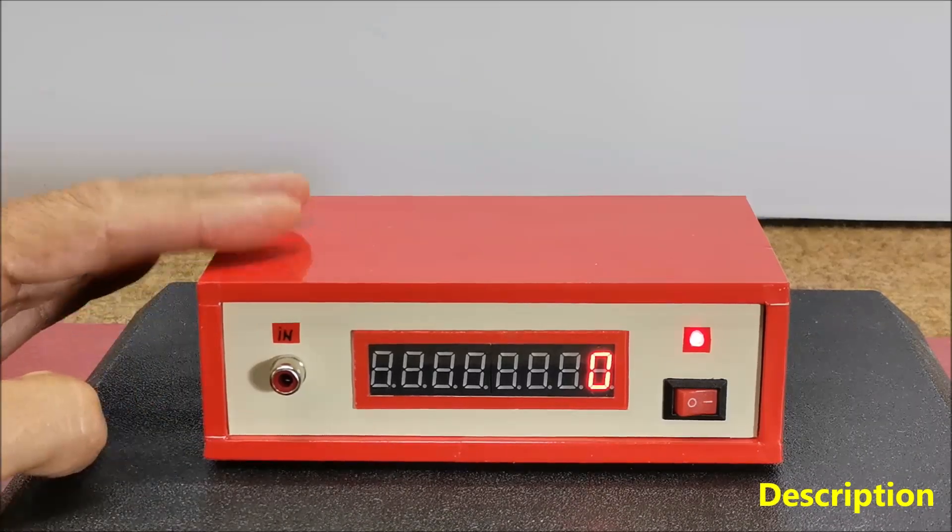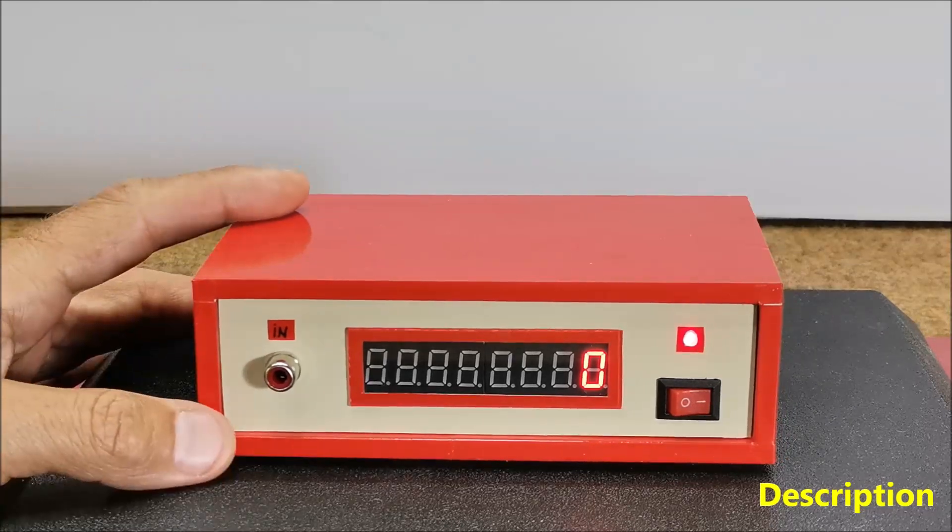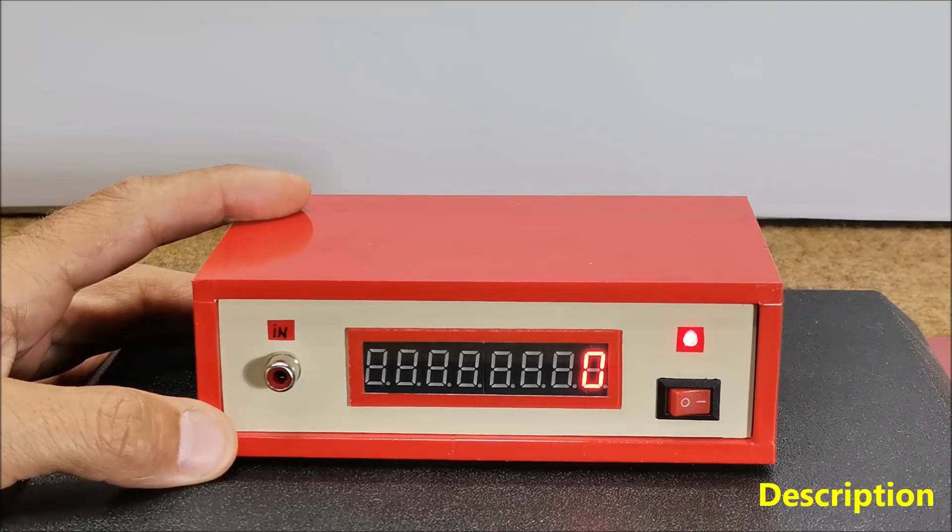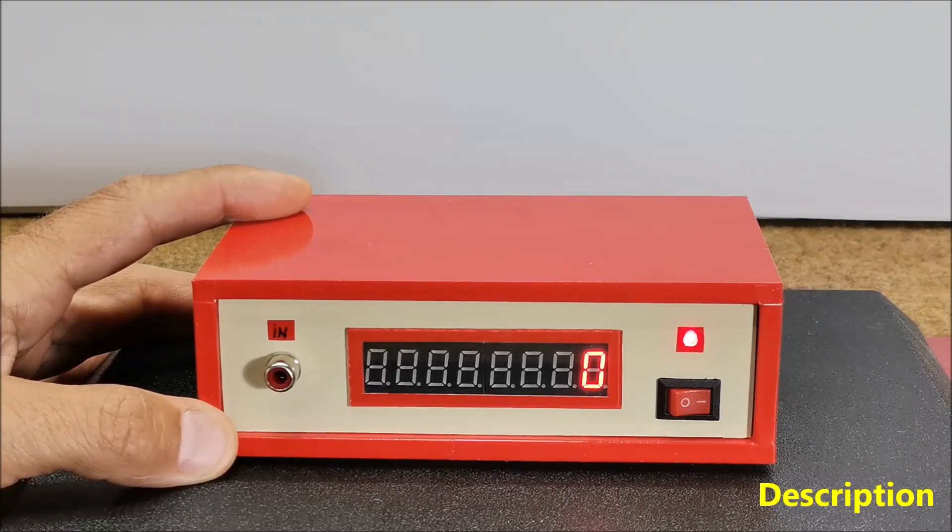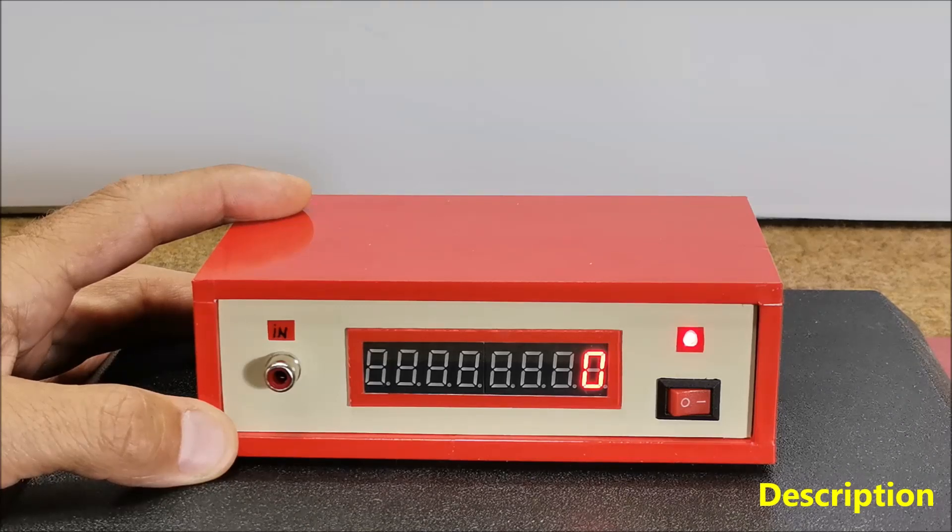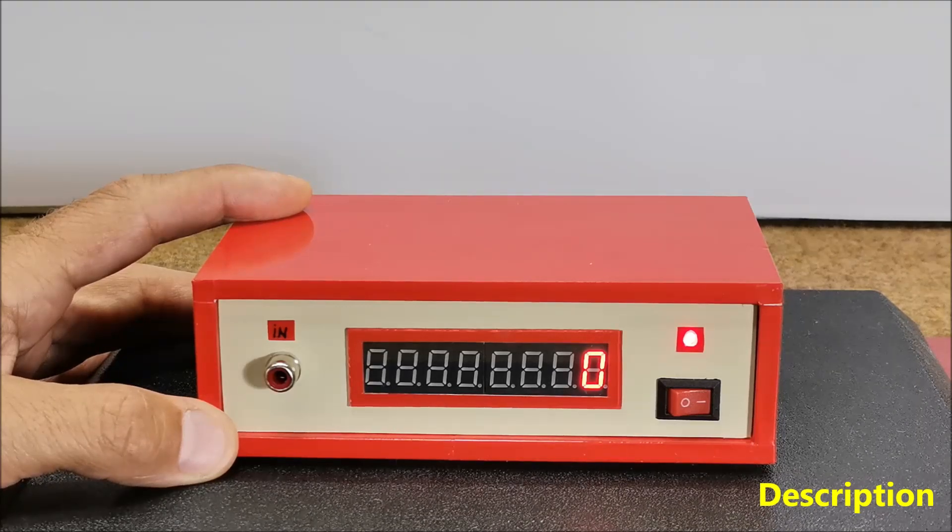This time the frequency meter uses an inexpensive STM32 microcontroller and, thanks to its better performance, the frequency range is from 0 to 30 MHz and therefore it is ideal for use in high frequency radio devices.